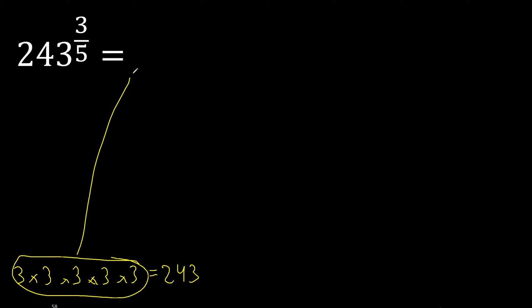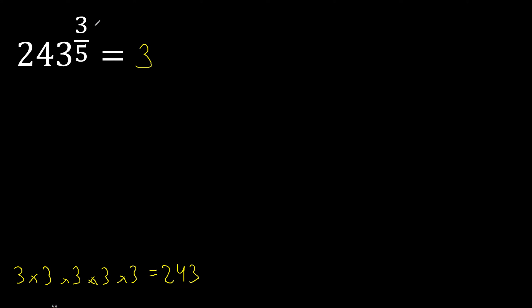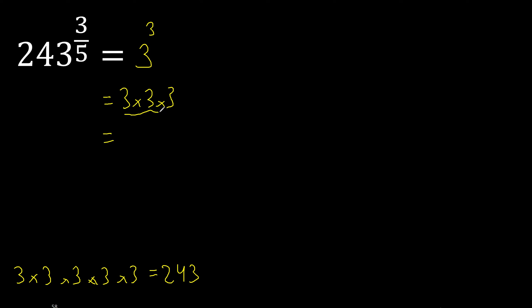Therefore here 3, 3 multiplied 3 times: 1, 2, 3. 3 multiplied by 3 is 9, 9 multiplied by 3 is 27. Finished.